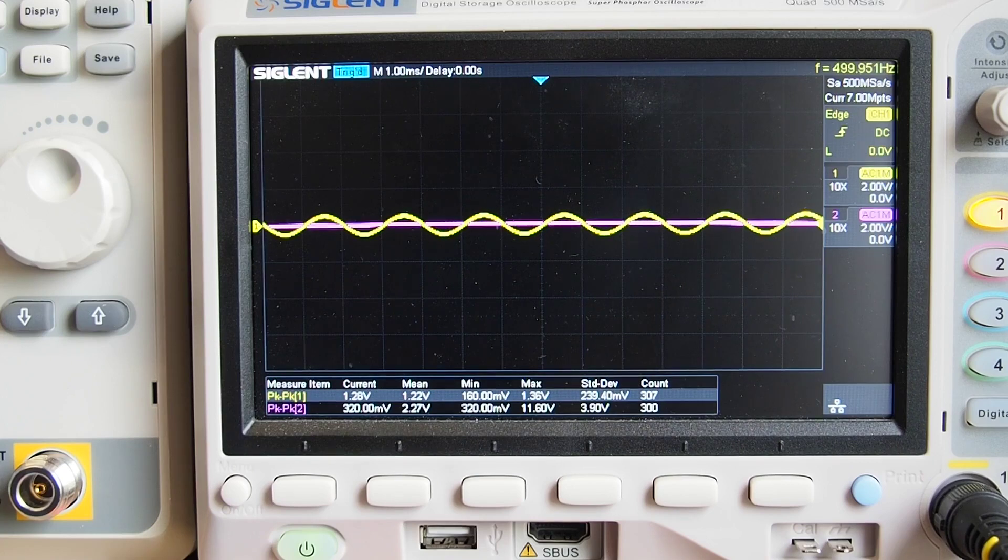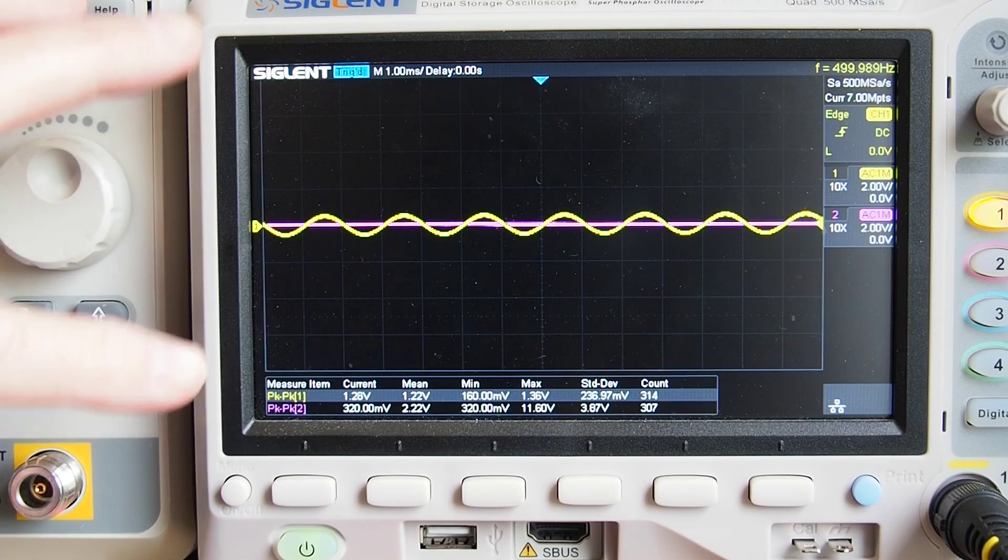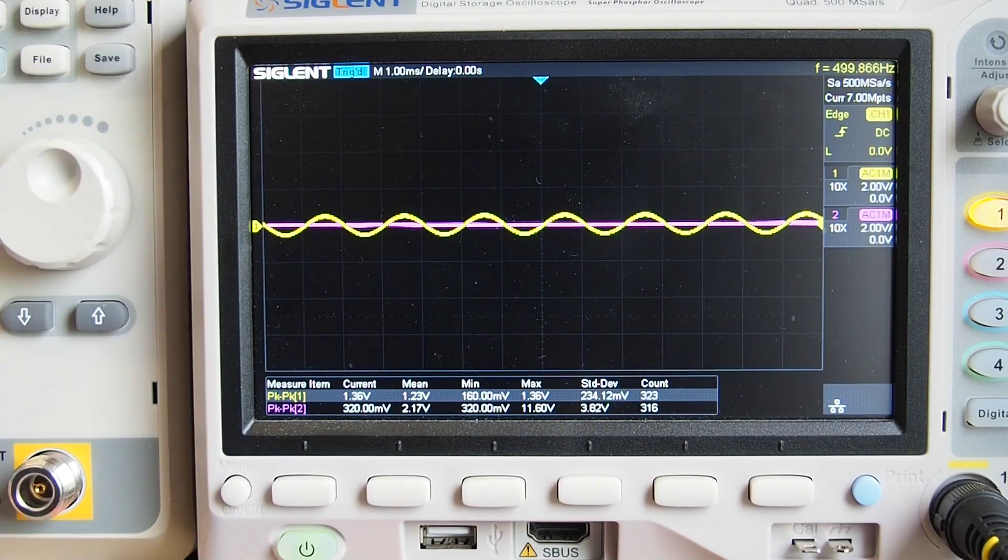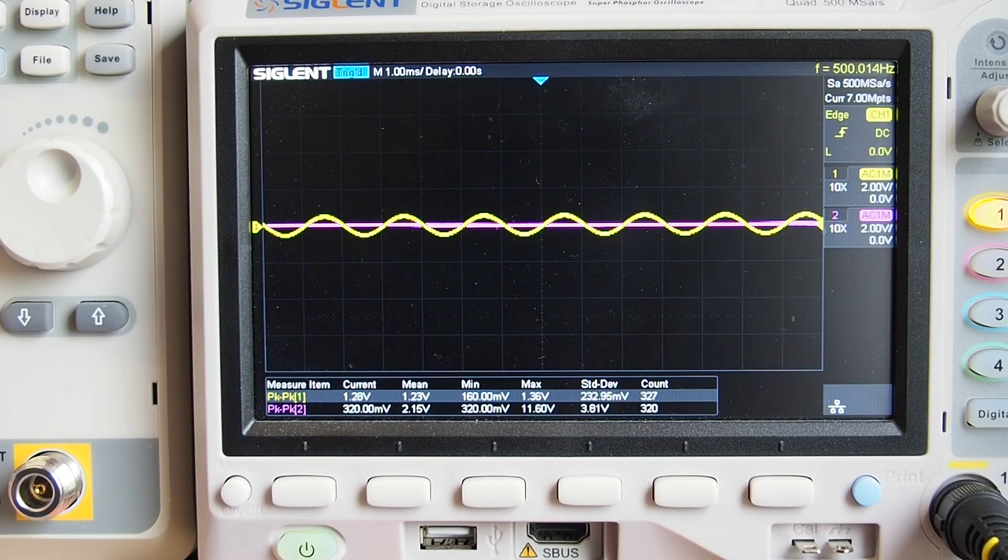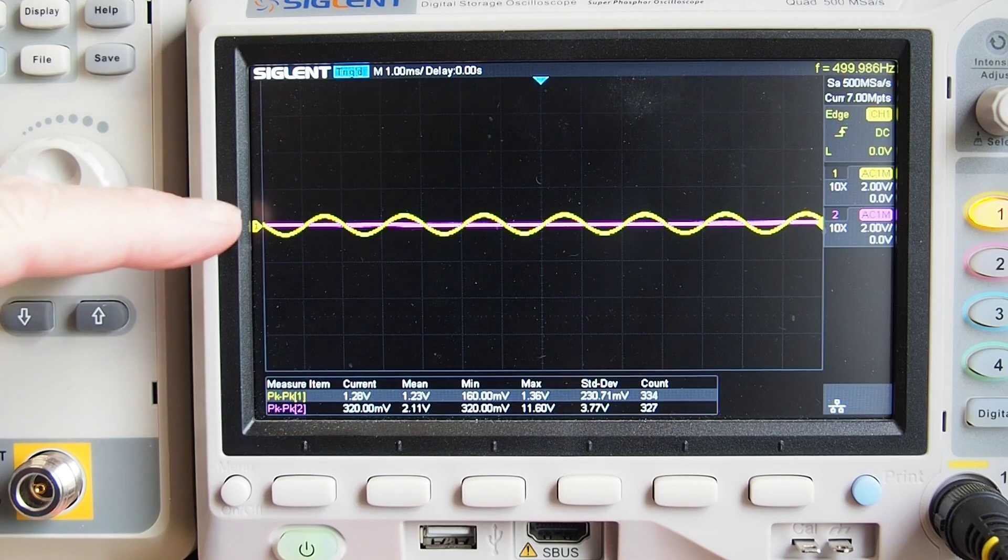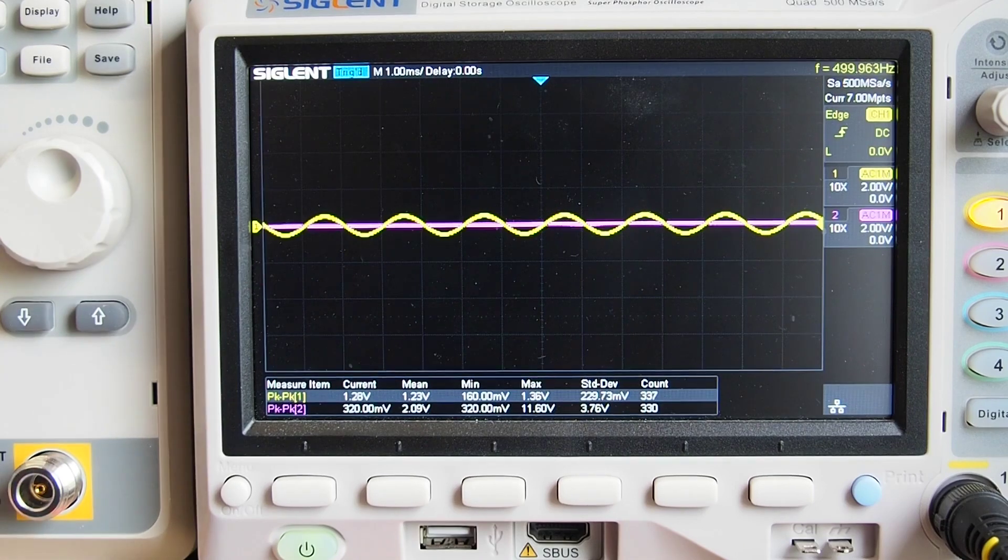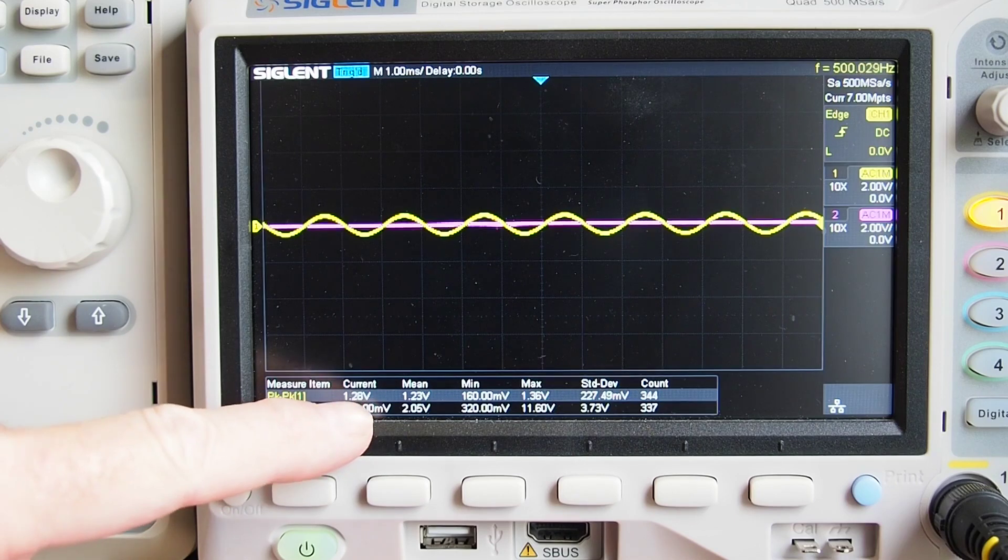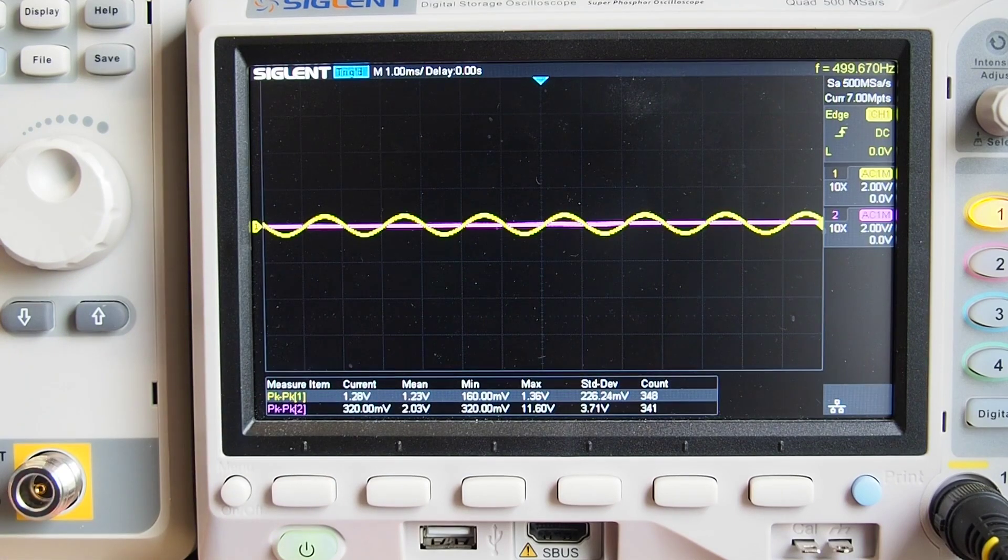Okay, here's the scope view then for the non-inverting amp. I've got both channel 1 yellow and channel 2 purple both set to 2 volts per division, so you can hopefully be able to see the effect of gain. This is the yellow trace, the signal on the input side of the amp. Currently the scope is saying it's about 1.28 volts peak to peak.